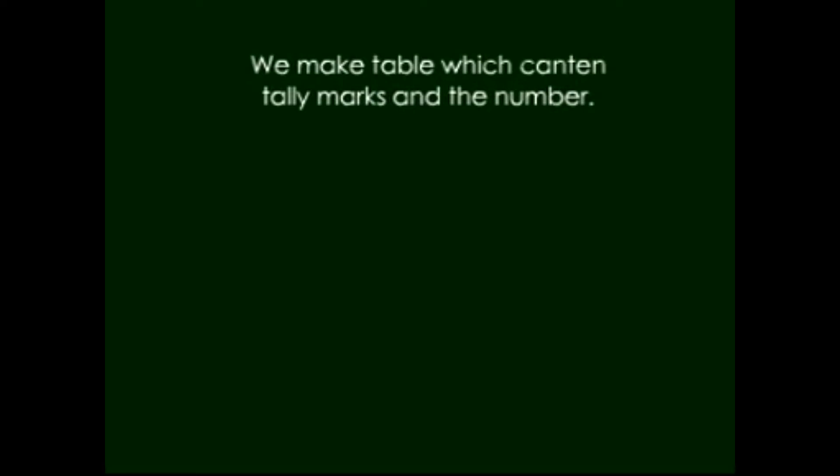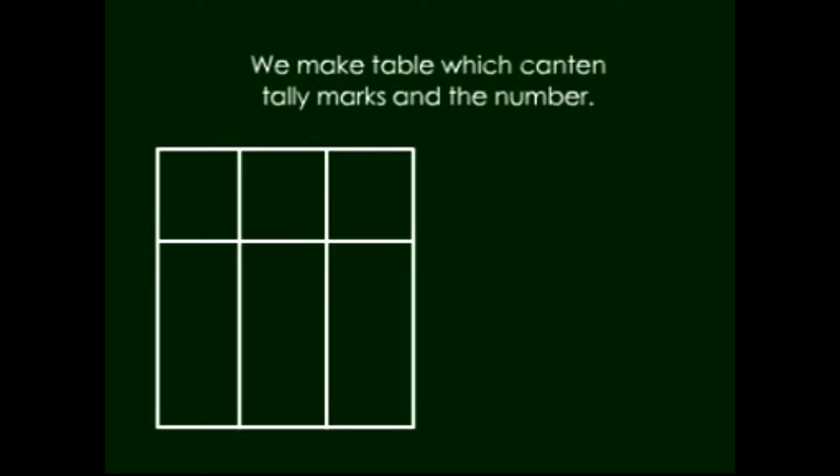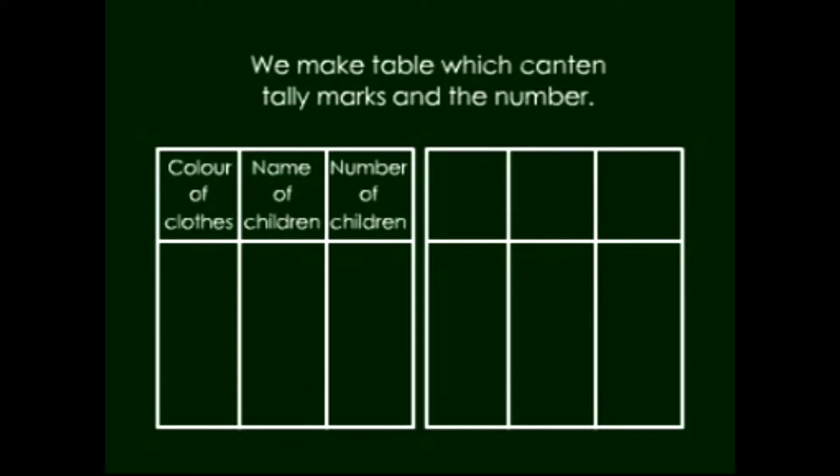So let's see one example. Colour of Clothes, Names of Children, Number of Children. And the second table contains Colour of Clothes, Tally Marks, and Number of Children.